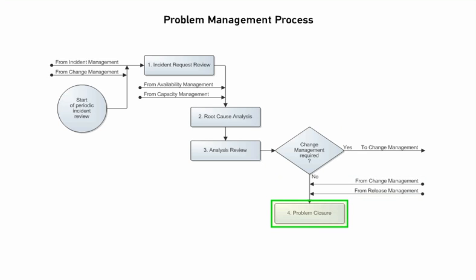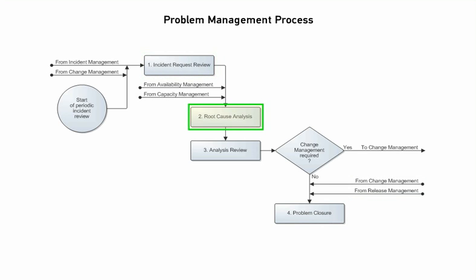During problem closure, the problem coordinator performs a final assessment of the problem investigation. If satisfied that the problem's root cause has been permanently removed, they close the investigation. If the root cause analysis concluded that no permanent workaround or solution currently exists and the problem coordinator agrees, they indicate that the problem investigation is at an impasse, leaving it open for periodic review in case an appropriate solution becomes available in the future. If the resolution didn't remove the root cause, or if the coordinator thinks an appropriate solution is available, they reassign the investigation for further analysis.